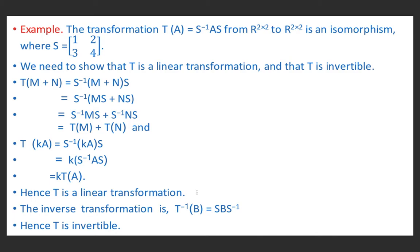Also, because S⁻¹ exists, we can write the inverse transformation as T⁻¹(B) = SBS⁻¹. Hence T is invertible. It means the transformation defined by T(A) = S⁻¹AS is an isomorphism.